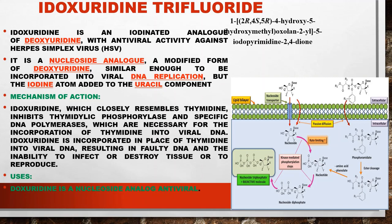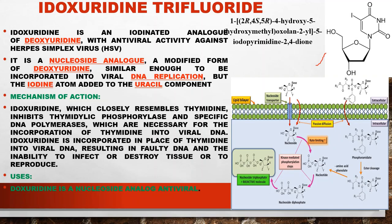The next drug is idoxuridine — an anti-herpes drug. Idoxuridine is an iodinated analog of deoxyuridine with antiviral activity against herpes simplex virus (HSV). It is a nucleoside analog — a modified form of deoxyuridine — similar enough to be incorporated into viral DNA replication, but with an iodine atom added to the uracil moiety.